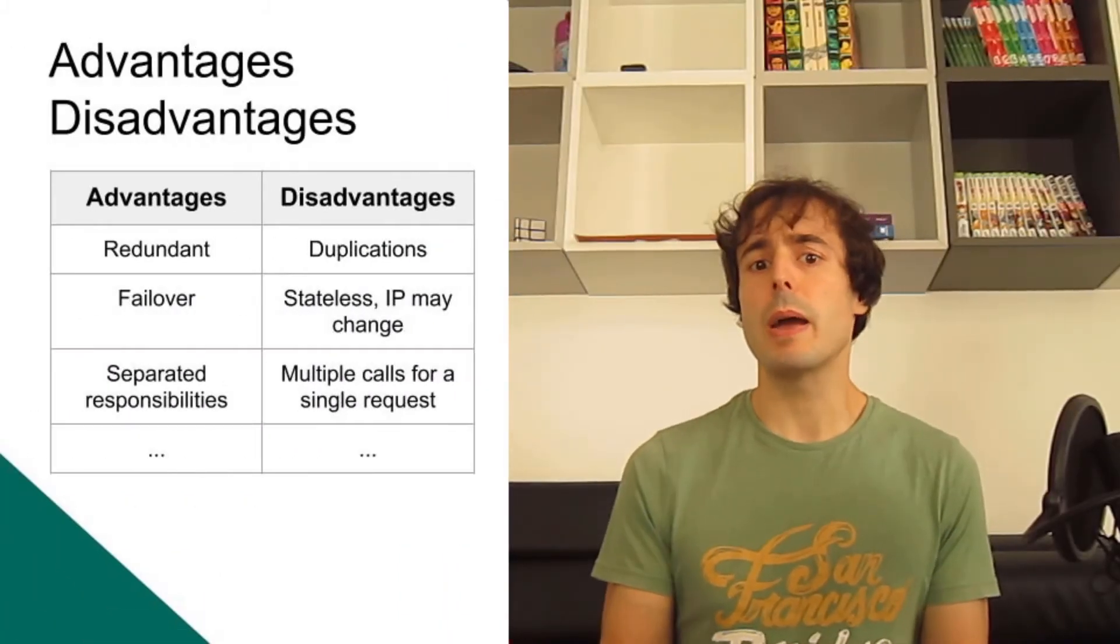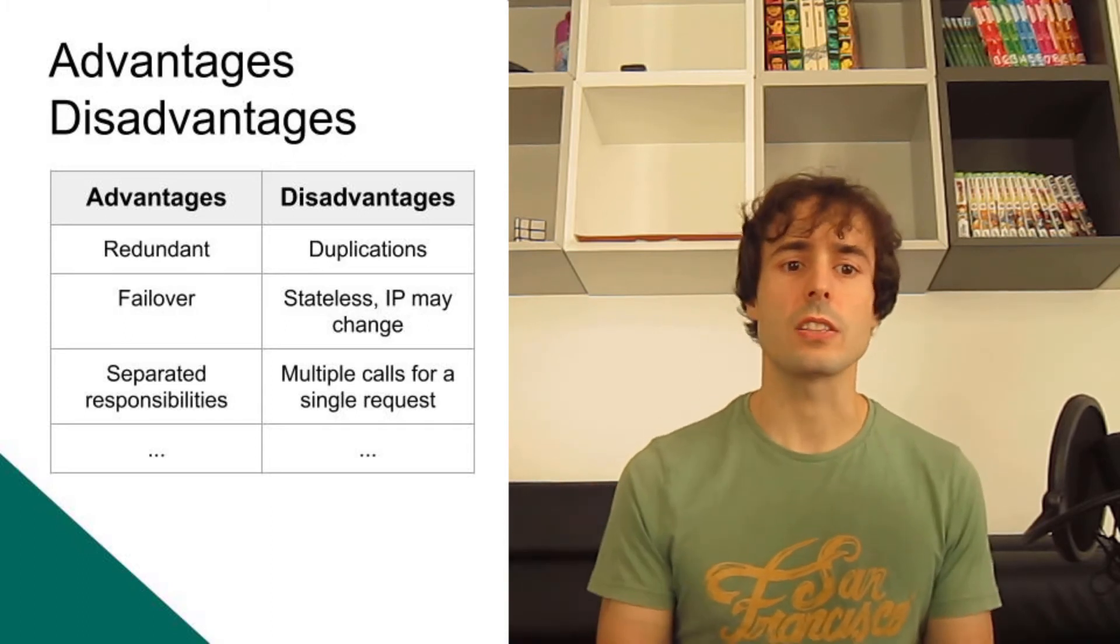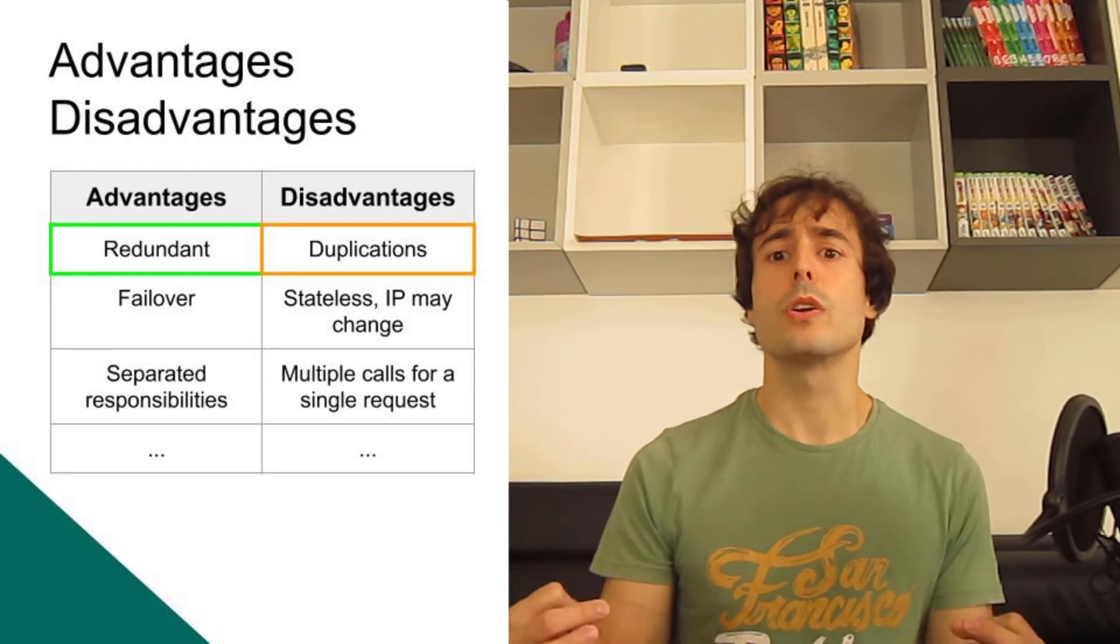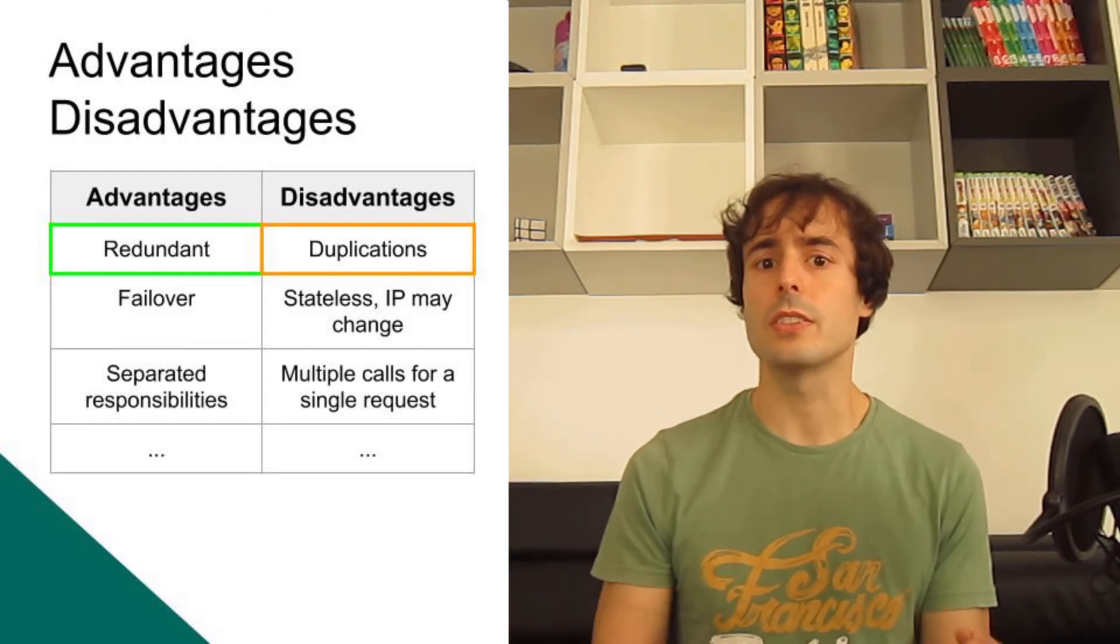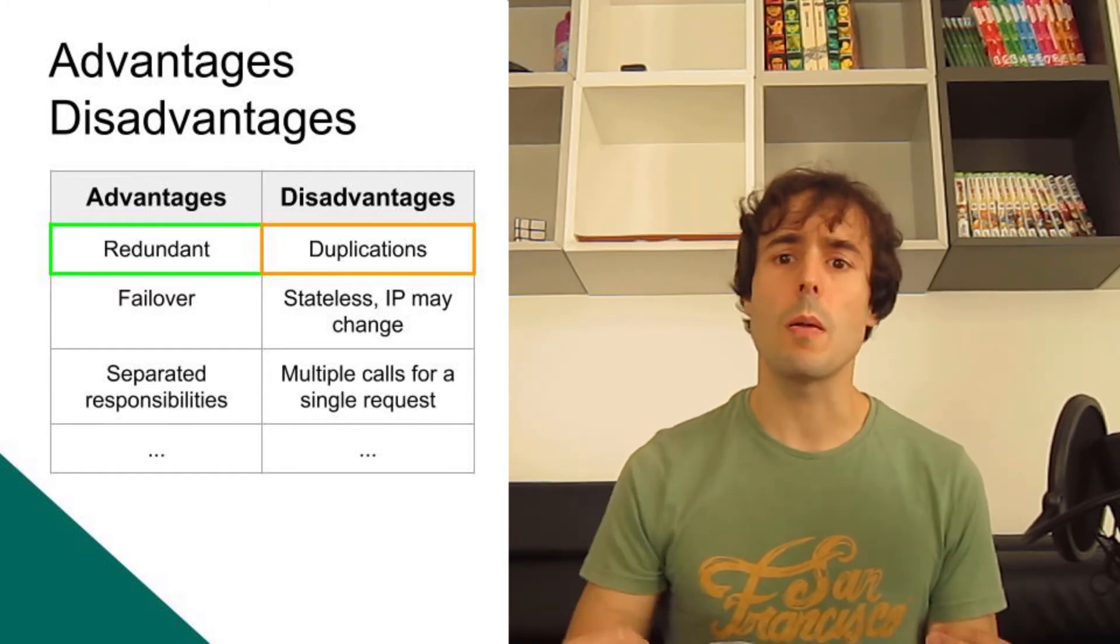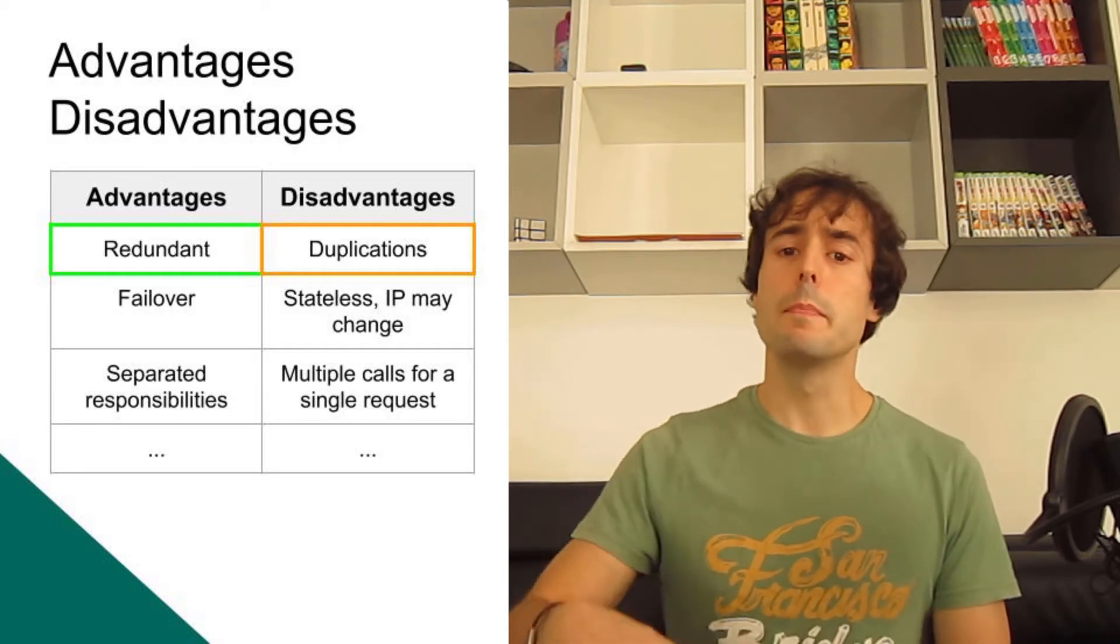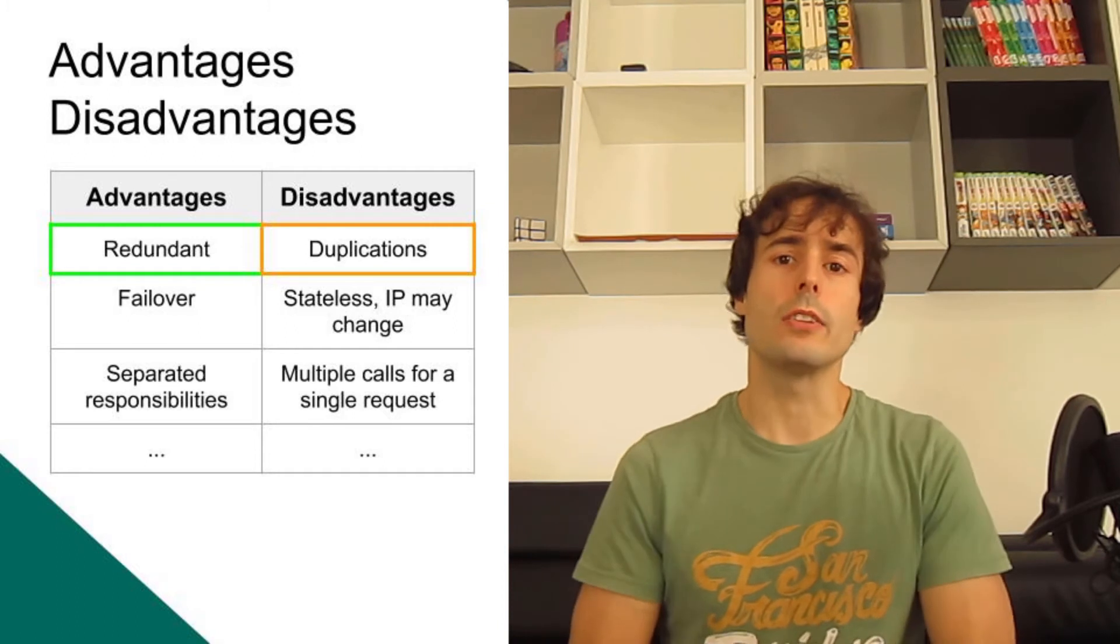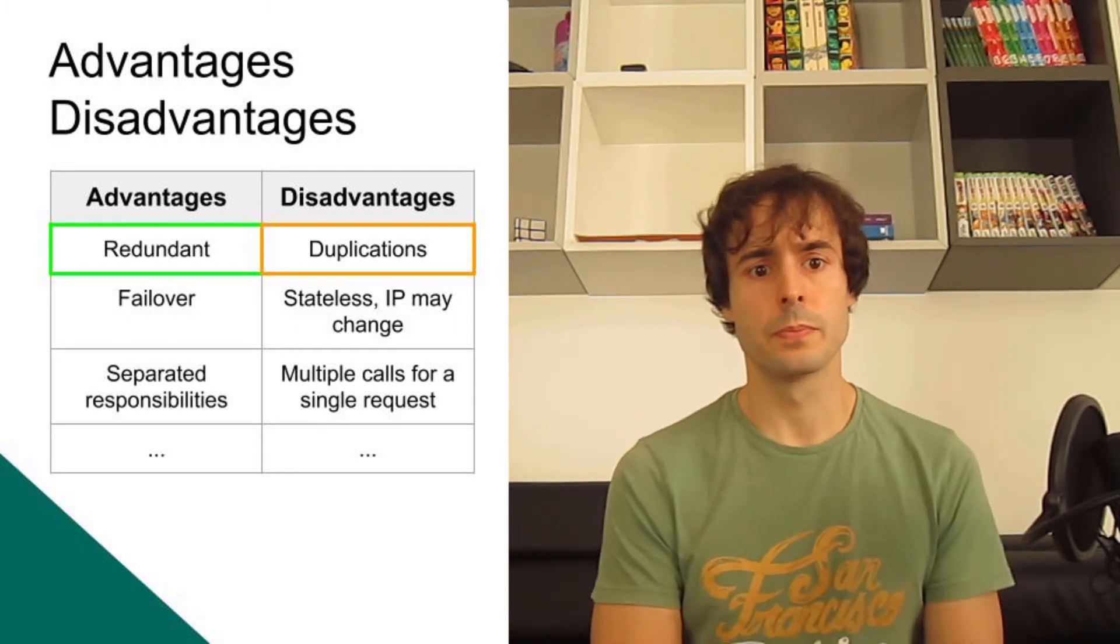Will this architecture be better than the previous one? There are some advantages and some disadvantages. Each microservice will be redundant, duplicated to ensure the continuity of the service if some error occurs. But having the same application split in several microservices will cause duplications. I have to define the same object in multiple services - in both servers and in the router - to allow correct reception.